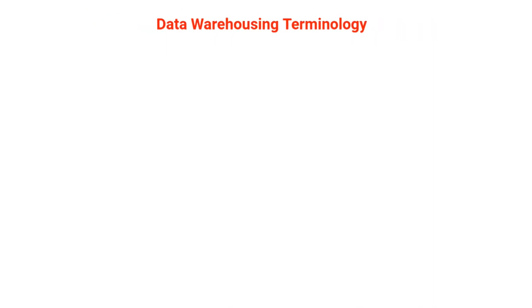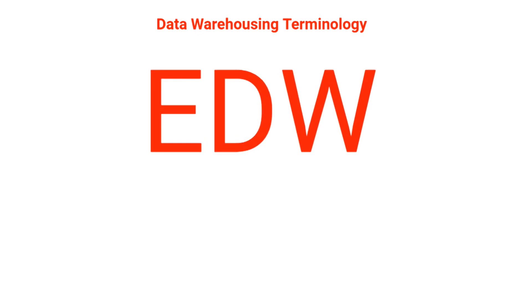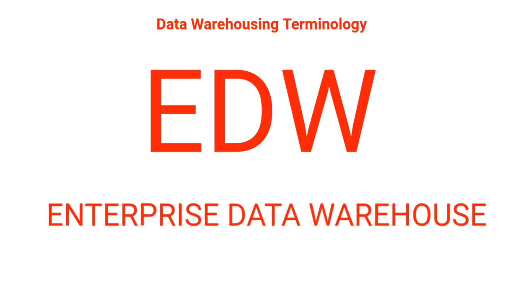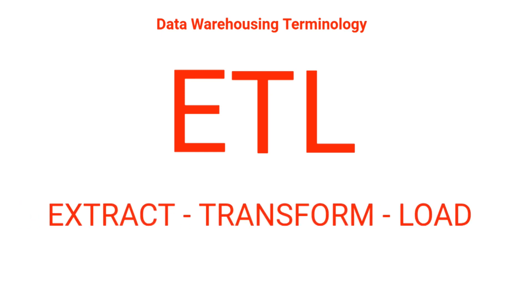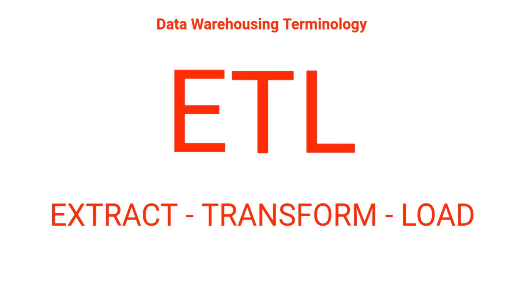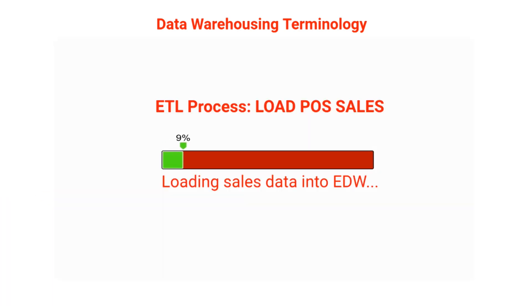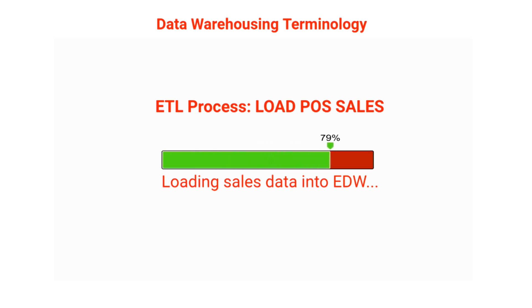Since this video is Data Warehousing 101, let's clear up some of the terminology you'll hear often and come to know well. First is EDW — this stands for Enterprise Data Warehouse. Next is ETL, an acronym you will hear and use often. This stands for Extract, Transform, Load. This refers to the processes you'll need to build to extract the data from the source systems, transform the data into the new structure, and ultimately load the data into the data warehouse.